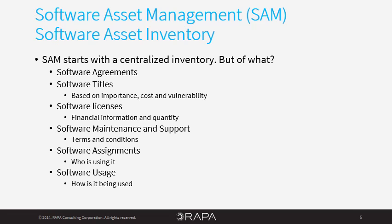The list of software titles you'll want to manage should be based on importance, cost, and vulnerability. Over the long run, you will want to manage all software for which you have some level of responsibility. However, initially, it is important to concentrate on realistic goals and a manageable list. The length of your managed software list will be determined by your available SAM resources and the amount of time they will be able to commit to the initial deployment.